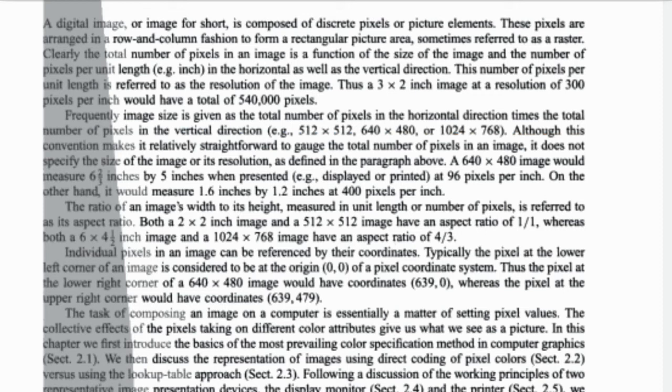This number of pixels per unit length is referred to as the resolution of the image. Thus, a 3 by 2 inch image at a resolution of 300 pixels per inch would have a total of 540,000 pixels.